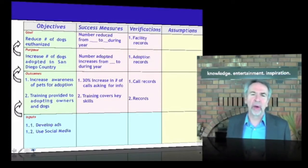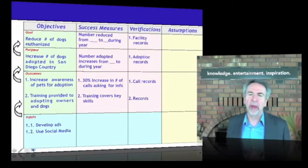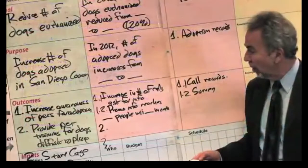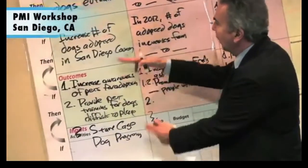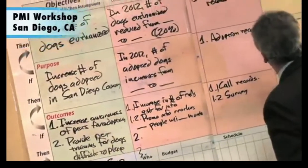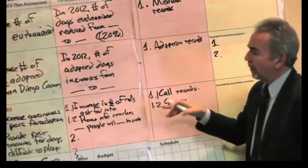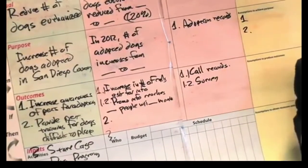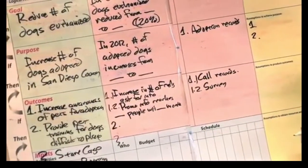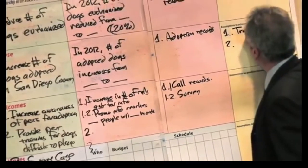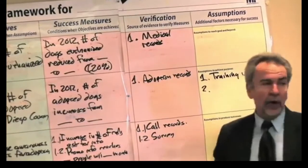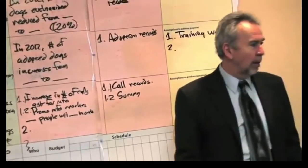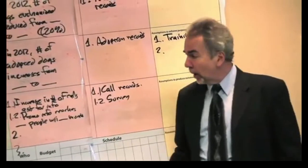Now let's add the third question: what other conditions must exist? This gets into assumptions and risk factors. If these outcomes lead to this purpose, provided that what? What assumptions do we have to make? That the training is effective — that the training works. Otherwise, people are going to take the dog home, can't deal with the dog, and bring it back. That the marketing works. And that people are willing to adopt a dog.